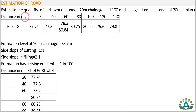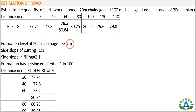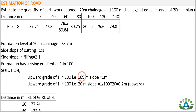We have distances from 20 meters up to 140 meters chainage, but in our question we need to find the quantity of earthwork only from 20-meter chainage to 100-meter chainage. The formation level at 20-meter chainage is 78.7 meters. The side slope for cutting is 1:1 and for filling is 2:1. The formation has a rising gradient of 1 in 100, meaning for every 100 meters we have a grade of 1 meter.